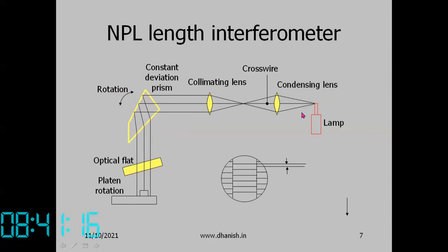We use white light and the prism splits it into different colours. Depending on the position of this prism, the light which comes down will be of different colours. We can create interference fringes of different colours using this constant deviation prism.